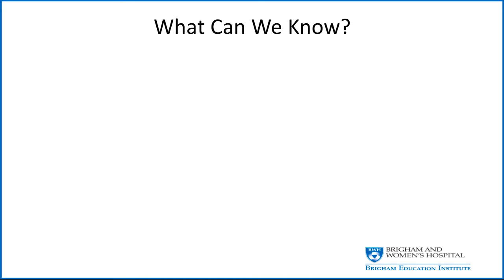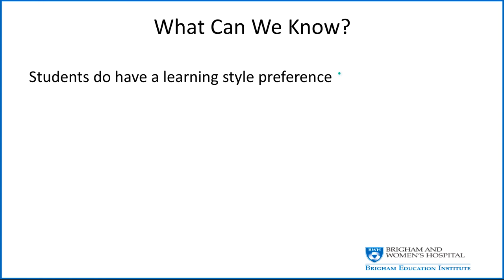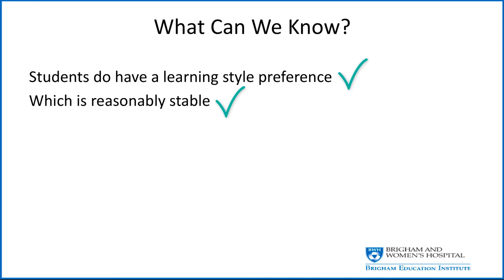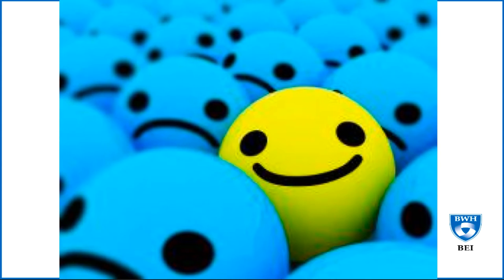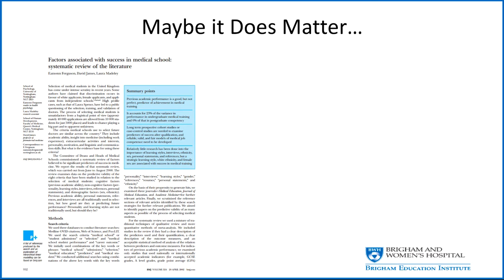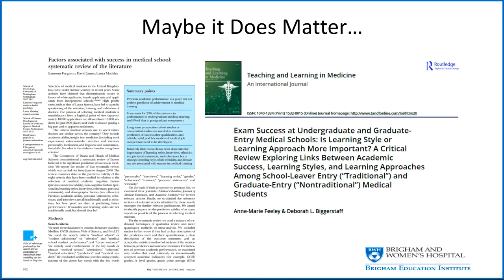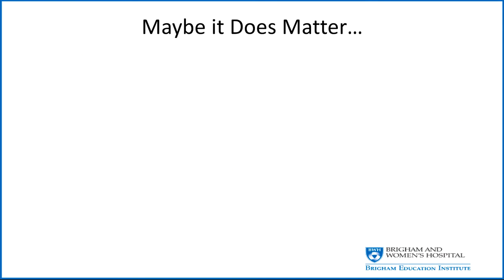So what can we reasonably conclude from the literature? We can agree that when asked, individuals do have a preference, and that preference is pretty consistent over time. But we don't know whether teaching to those preferences leads to better learning. Not all the evidence is bad, though. There is some data suggesting that how we go about learning does matter. Ferguson did a meta-analysis using the tripartite model and found that strategic learning — motivated by desire for success — was associated with academic success, while surface learning — motivated by fear of failure — was negatively associated with success. Subsequent studies continue to support this.